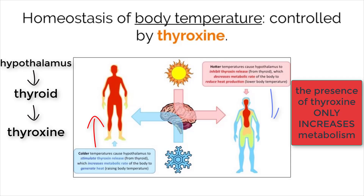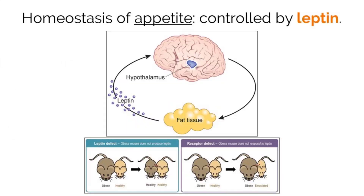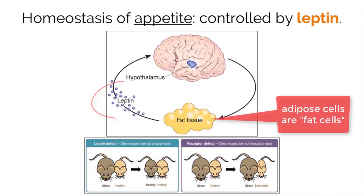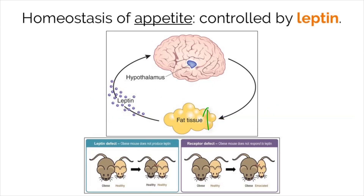Appetite is regulated by leptin. Leptin is a hormone produced by adipose cells that suppresses appetite when it binds to receptors in the hypothalamus. Overeating causes more adipose tissue to form, which means more leptin will be secreted, lowering appetite. On the other hand, if your body is experiencing a reduction of adipose tissue through starvation periods, there is less leptin released, triggering hunger.